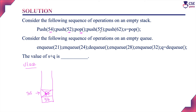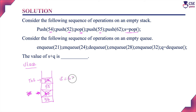The next operation is push 55, followed by push 62. Now the top of the stack points to 62. Next we perform the pop operation to get S. The last element pushed is 62, so 62 is popped first. Therefore S equals 62.